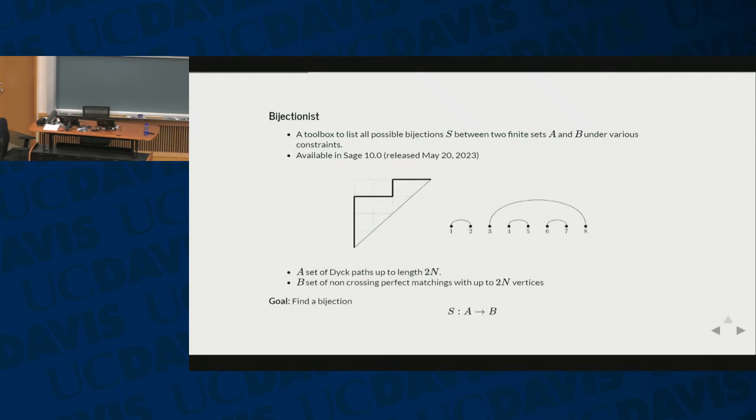And because time is limited, I only give a really baby example. So we'll have two sets, the set of Dyck paths and the set of non-crossing perfect matchings. And I bet all of you know some bijections between those two sets, but we will find one with our bijectionist. And notice here, A is not the set of Dyck paths of length 2n, but up to length 2n. And B is the set of non-crossing perfect matchings up to size 2n in this example.